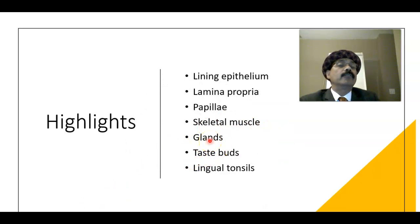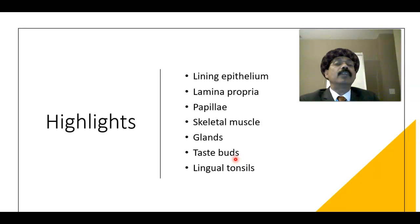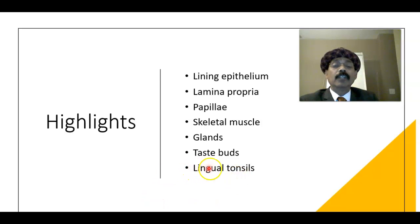The tongue has serous, mucous, and seromucous glands, as well as tubuloacinar-type glands. Taste buds are modified epithelial cells connected to cranial nerves: the anterior two-thirds of the tongue is served by the chorda tympani branch of the facial nerve, the posterior one-third by the glossopharyngeal nerve, and the extreme posterior part carries taste sensation via the vagus nerve. The lingual tonsil is part of Waldeyer's ring of tonsils, forming a circle of defense along with the palatine tonsil and pharyngeal tonsil.